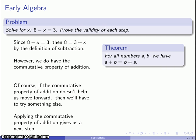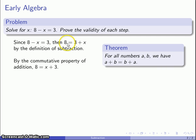So let's take a look at that. By the commutative property, I can take this 3 plus x and I can rewrite it as x plus 3.